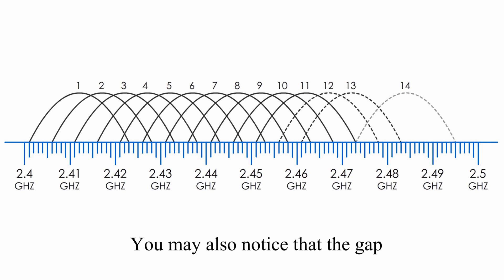You may also notice that the gap between adjacent channels is 5 MHz wide. Thus, there are many overlaps among these 11 channels. For this reason, only 3 channels can be active at any one time.